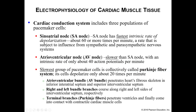Next comes your AV node, which is slower than the SA node — approximately 40 action potentials per minute. The signal then spreads to your Purkinje fiber system, which depolarizes only about 20 times per minute. From the AV node we go down to the AV bundle, then branch off into the left and right bundle branches, which curve around and penetrate the ventricles, ending at the Purkinje fibers, to get contraction in the ventricles.